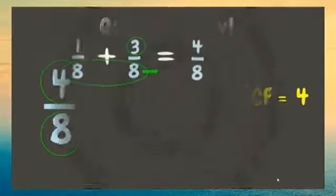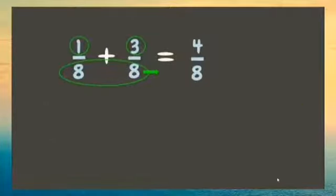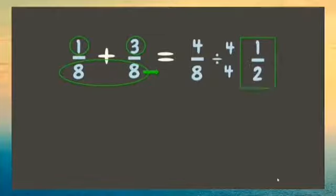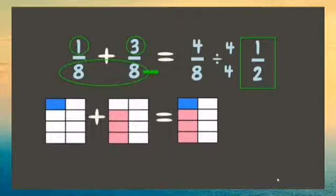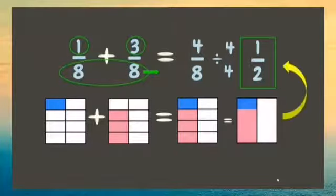Now that we know the GCF, we are going to divide the numerator and the denominator by the GCF, which is 4. Four divided by 4 is 1. Eight divided by 4 is 2. Therefore, our answer is one-half. Let's check our answers by drawing some representations. Great job! Let's try some more!